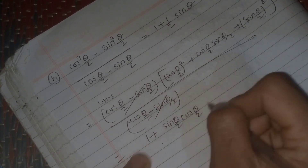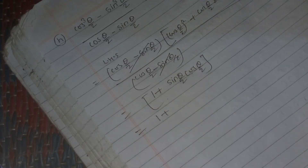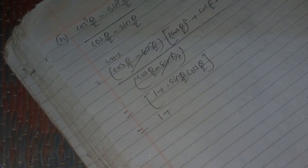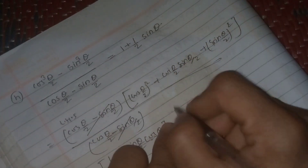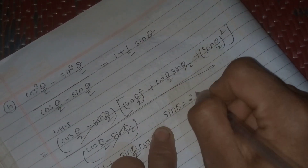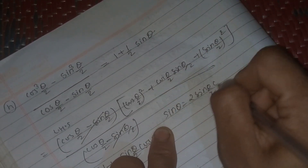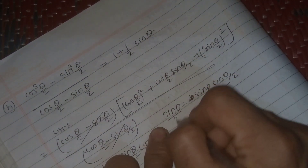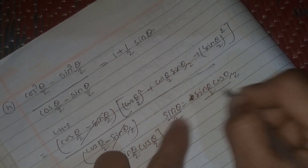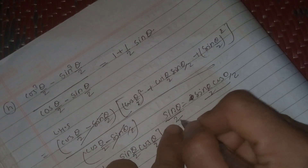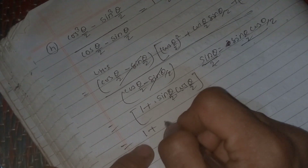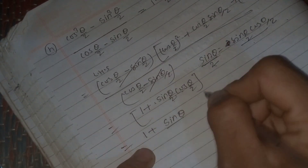One plus sin theta by 2 cos theta by 2, divided by two cos theta by 2. sin theta by 2, cos theta by 2, cos theta by 2, cos theta by 2. Which can be sin theta upon 2a by 2.